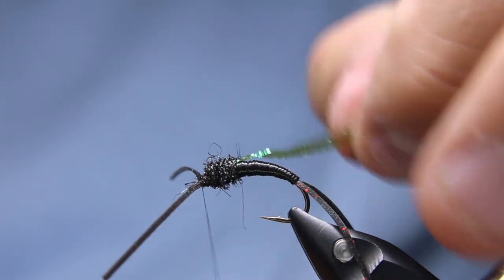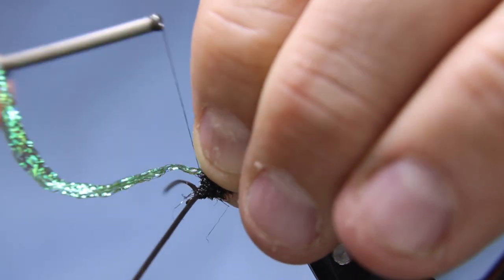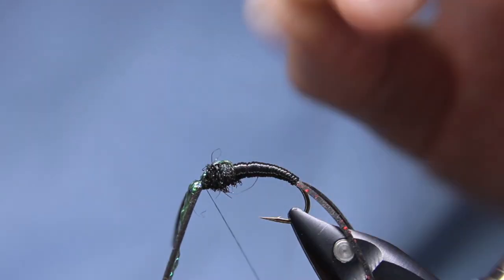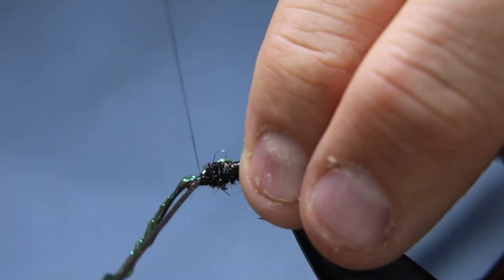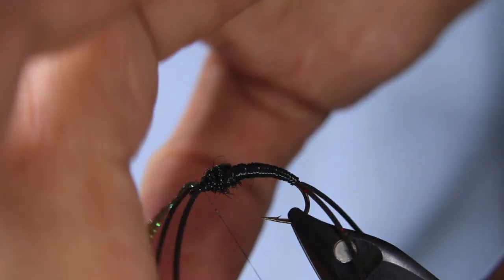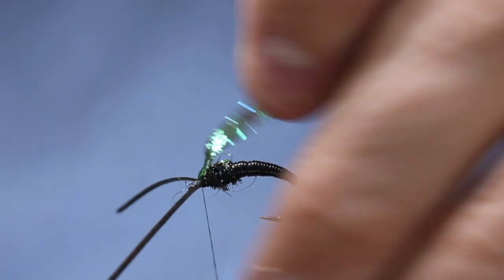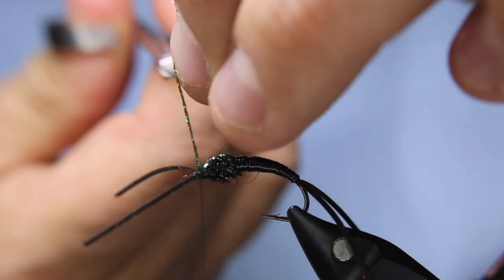I'm up to there. Bring my scud back forward, hold that down, just a loose wrap just to make sure it stays where it is. Give that a bit of a tug just to make sure it's tight. Two, three, lift it up, two, three. Just nip off that shell back.